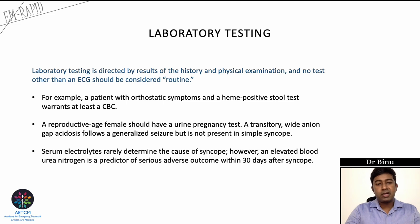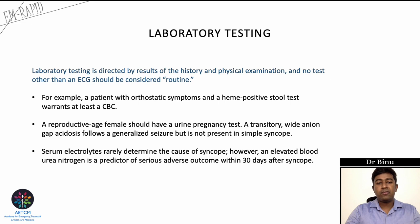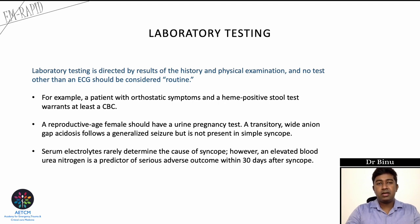Laboratory testing is directed by history and physical examination; no test other than an ECG should be considered routine in the ED for syncope evaluation. A complete blood count is indicated if the patient presents with orthostatic hypotension and stool occult blood positive. A pregnancy test is required for young females with syncope. A transient wide anion gap metabolic acidosis is usually seen in generalized seizure but not in simple syncope. Serum electrolytes usually don't give much clue, but elevated blood urea nitrogen can predict serious adverse outcomes in the 30 days following syncope.